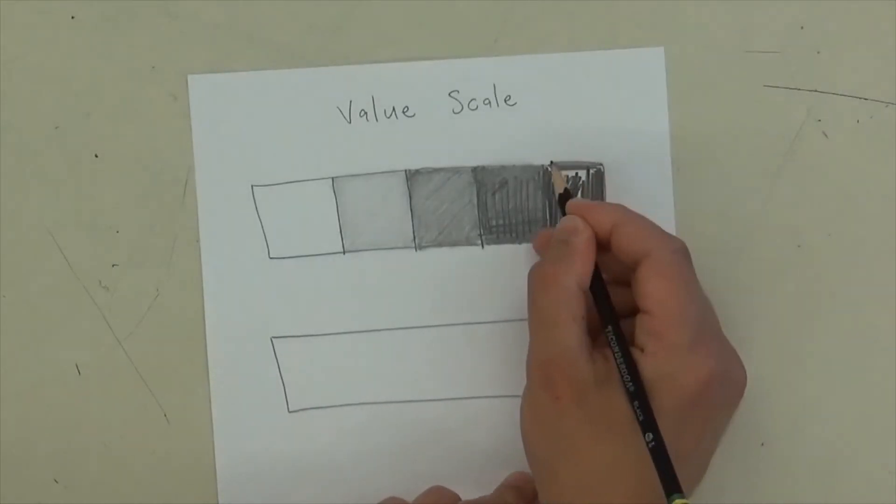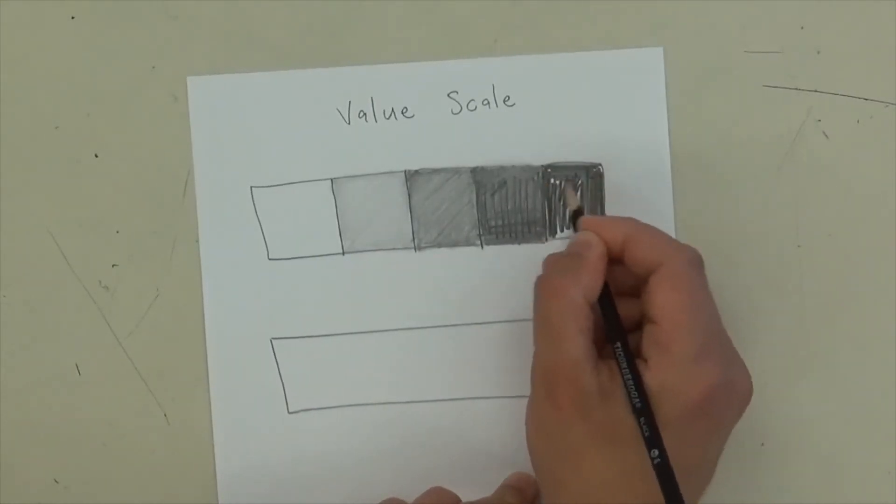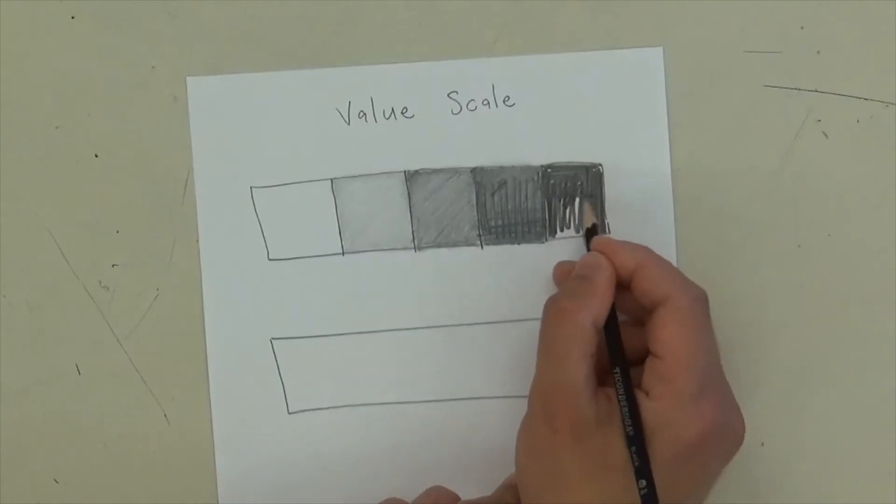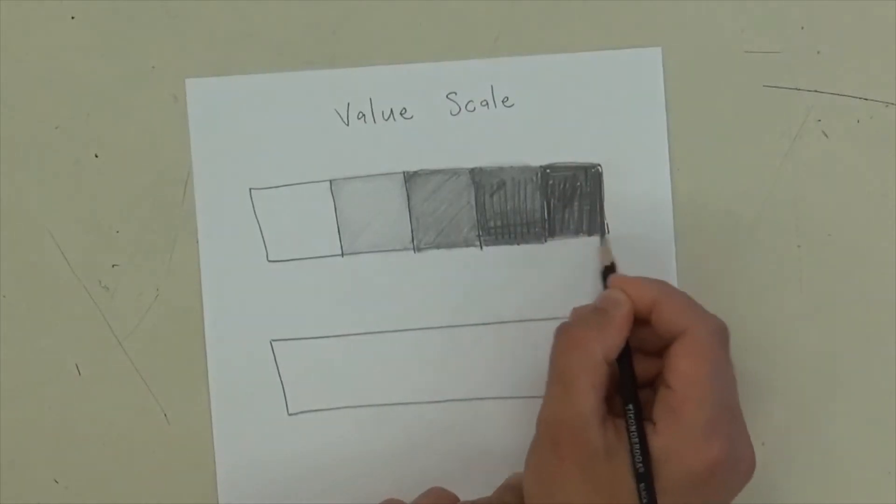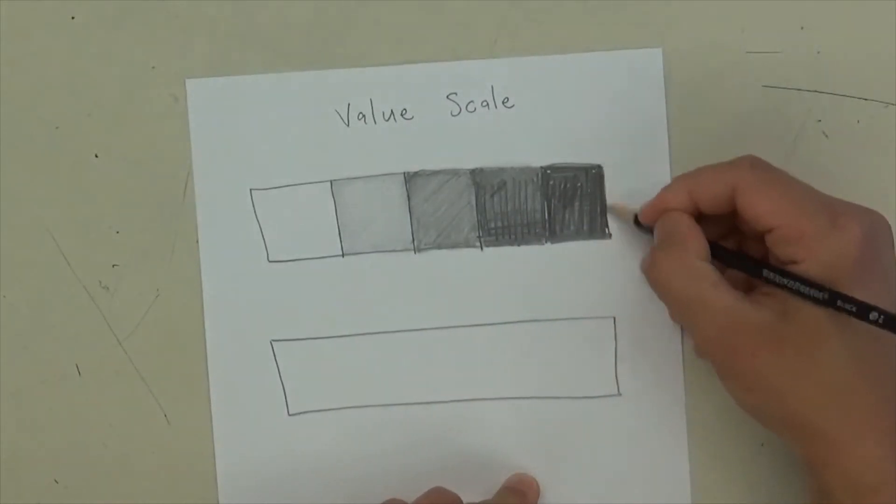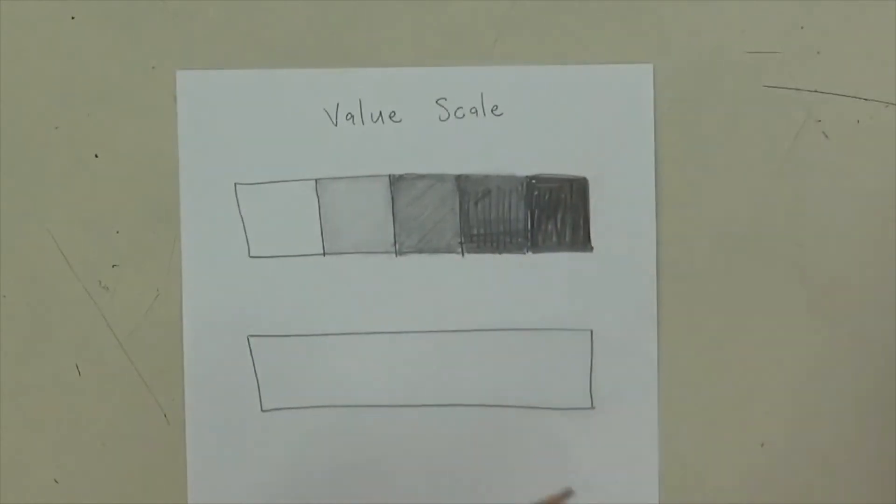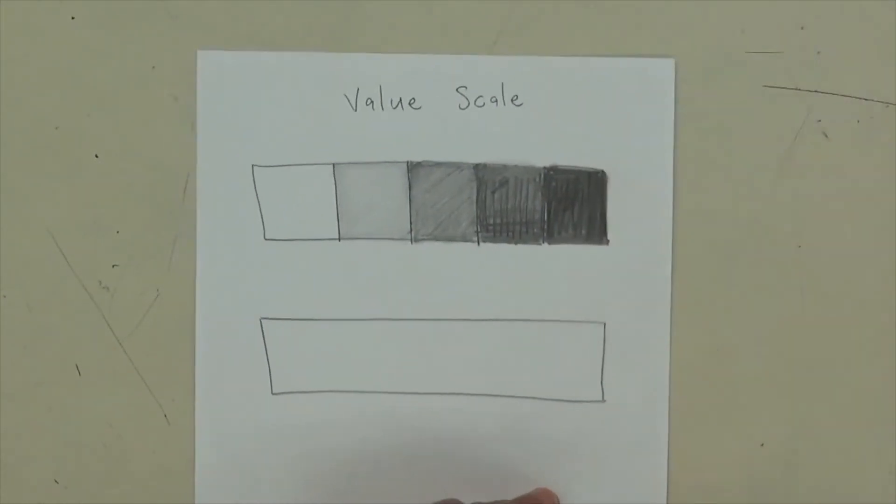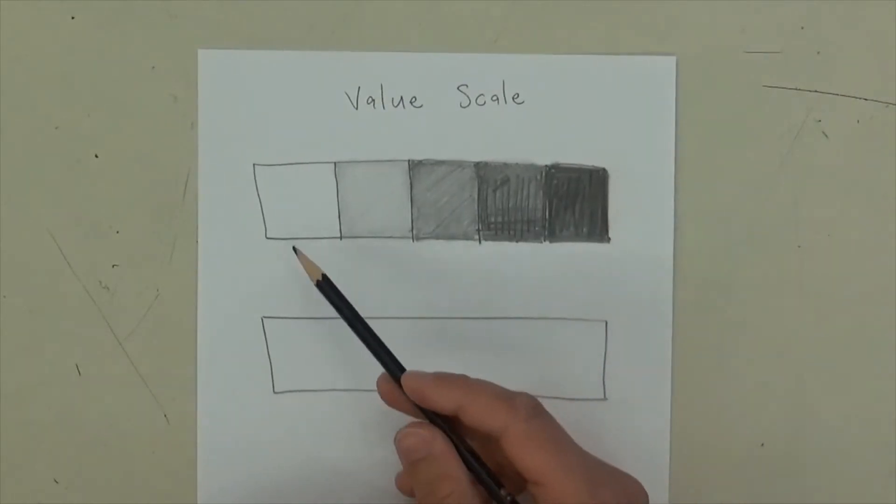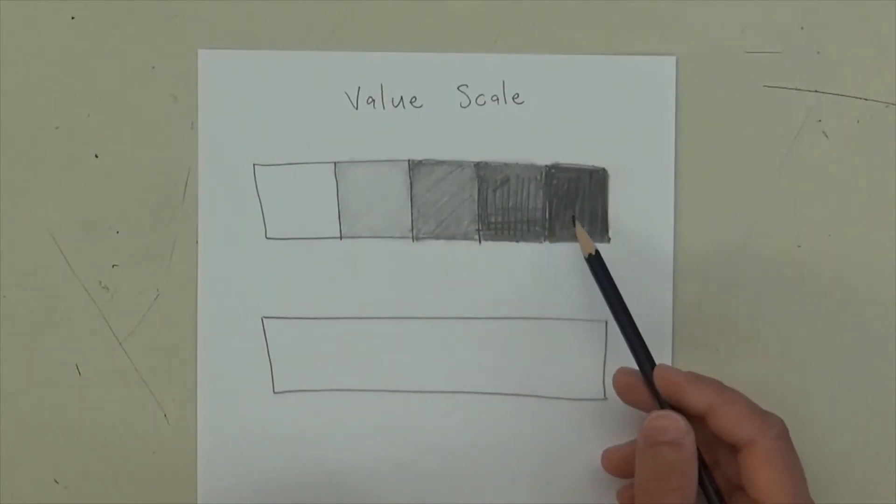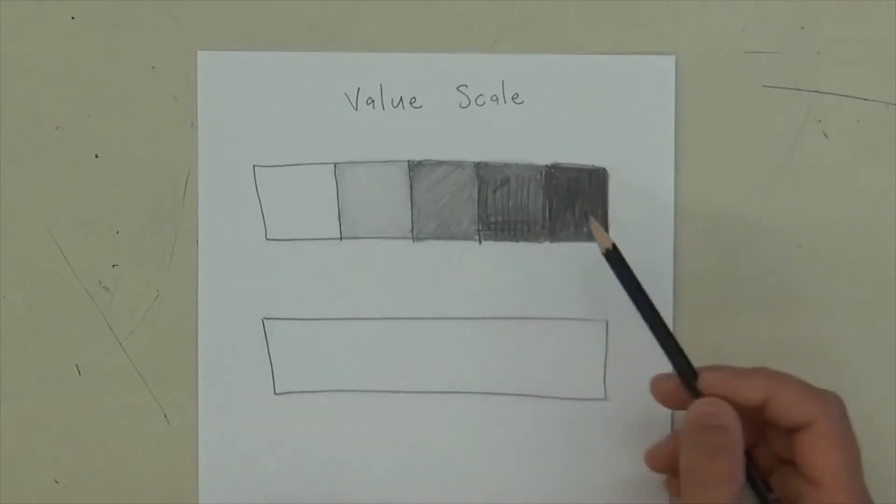It's really hard to get black with graphite, because it's really just dark gray anyway. But as long as you're getting it as dark as you can, it's good enough. And then you blend it like that. So that's it. So we've got white, light, medium, dark, and black, we'll call it. And that's one value scale.